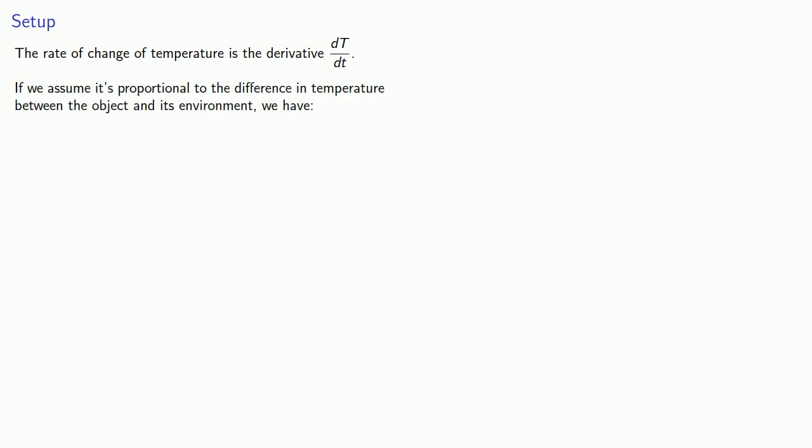Let's consider our setup. First, the rate of change of temperature is the derivative dT over dt. If we assume it's proportional to the difference in temperature between the object and its environment, we have dT over dt is k times T minus T sub a, where k is our constant of proportionality, and T sub a is the ambient temperature.